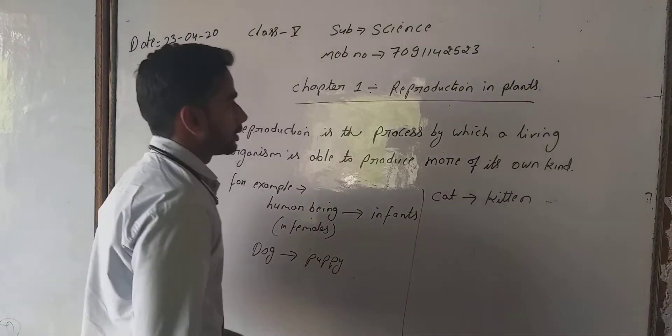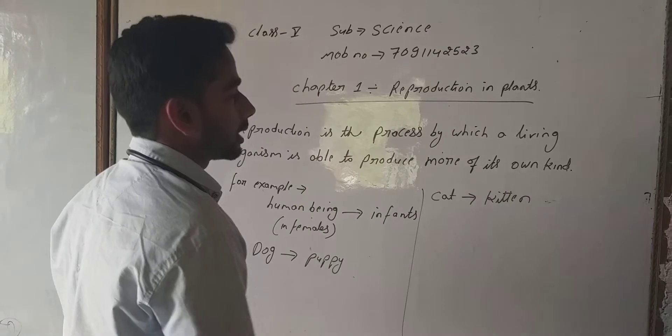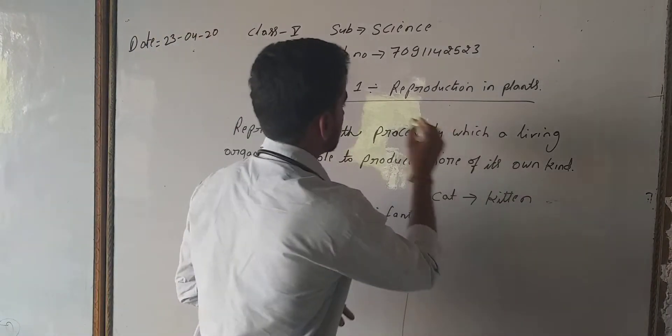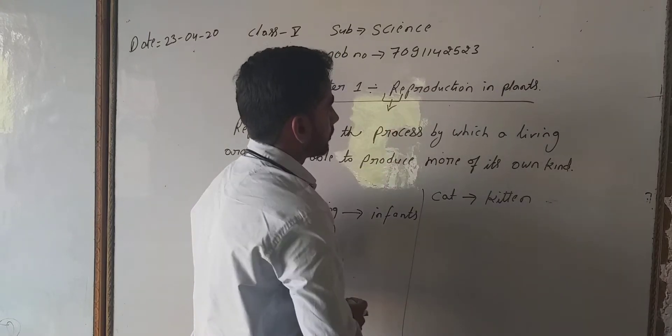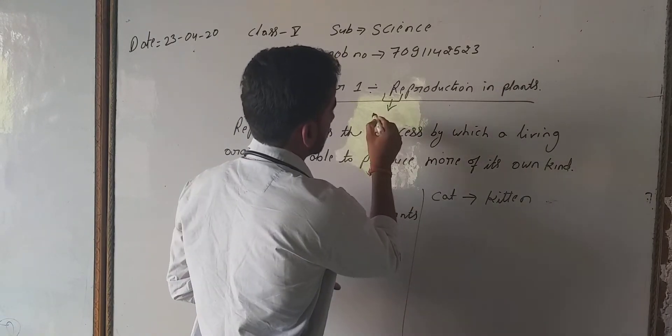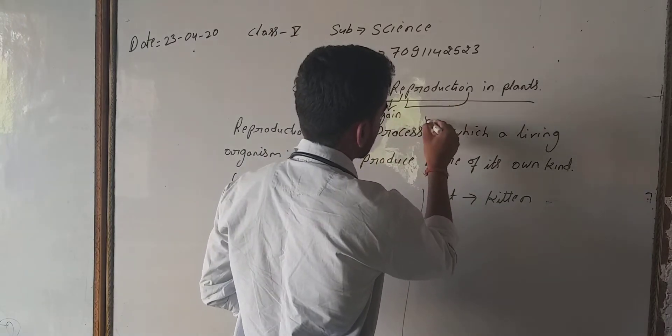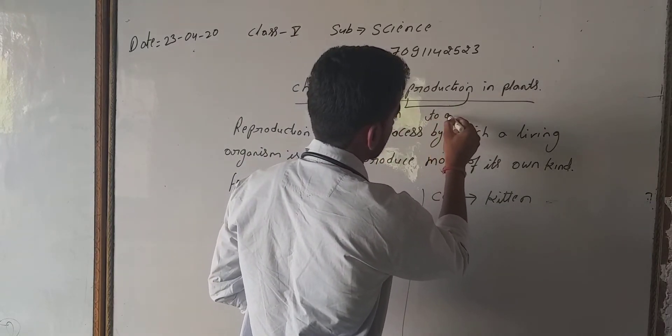First of all, I am going to explain the term reproduction. What do you mean by reproduction? Reproduction is made up of two words: 're' stands for again, and 'production' stands for to produce.